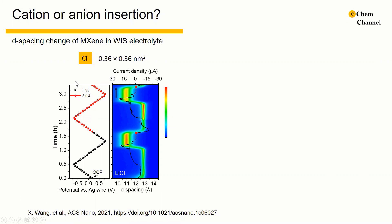To understand the process, we should first know what kind of ion is involved — either cation or anion. So in-situ XRD analysis was performed to monitor the change in the interlayer spacing of the titanium carbide electrode during electrochemical cycling in the water-in-salt electrolyte. In the lithium chloride water-in-salt electrolyte, an abrupt decrease from 12.9 Å to 11 Å of the d-spacing of titanium carbide was observed at 0.5 V, and an abrupt increase from 11 to 11.9 Å was observed at 0.24 V. The abrupt shrinkage and expansion of the d-spacing both occur at the onset potential of the anodic and cathodic peaks in the CV, marked as black dots and red dots in the figure, respectively.